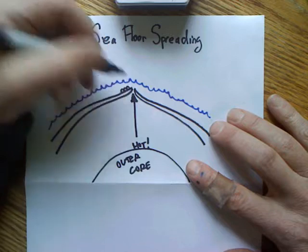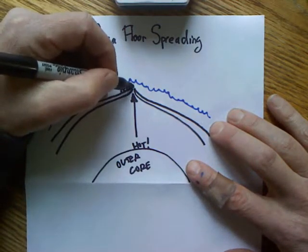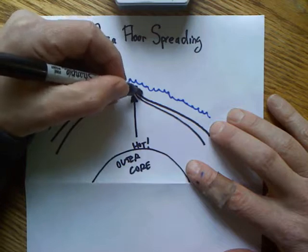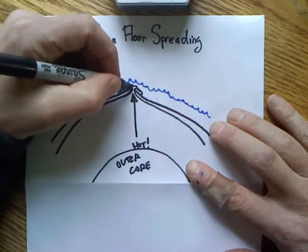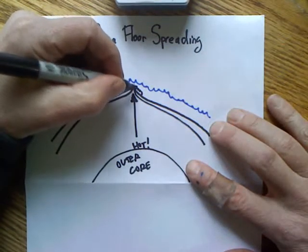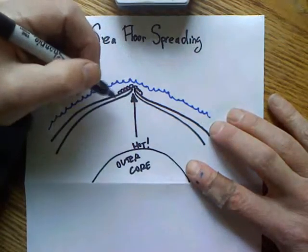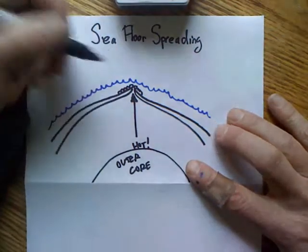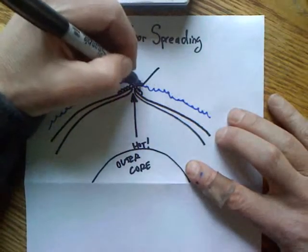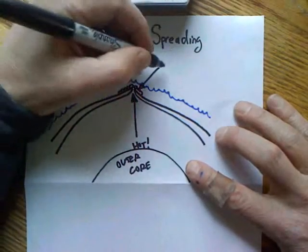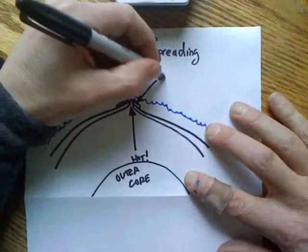The lava is what's pouring out when it comes out of the surface, and that's going to pour out and become igneous rock. This igneous rock cools quickly, so there are no crystals in it. It's going to create a mountain range underwater, and we can even label that — you can call it an 'undersea ridge.'